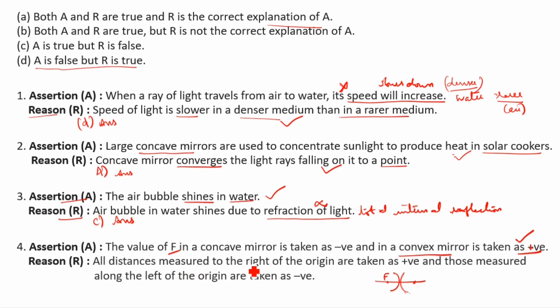Reason: All distances measured to the right of the origin are taken as positive. Yes, this is the right side, this is left side. Left side always negative, right side always positive. That is why mentioned here all distance measured to the right of the origin, this is the origin point. Right side is always positive and those measured along the left of the origin are taken as negative. This is left side origin is negative.